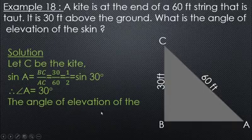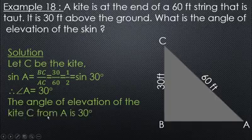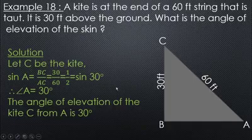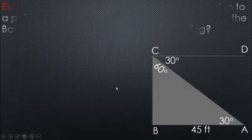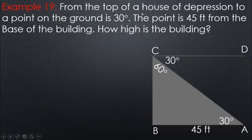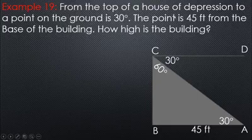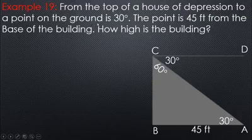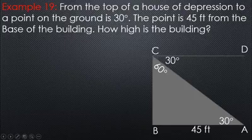The angle of elevation of the kite C from A is 30 degrees. The angle of elevation of the mountain from the top of the house is 30 degrees.